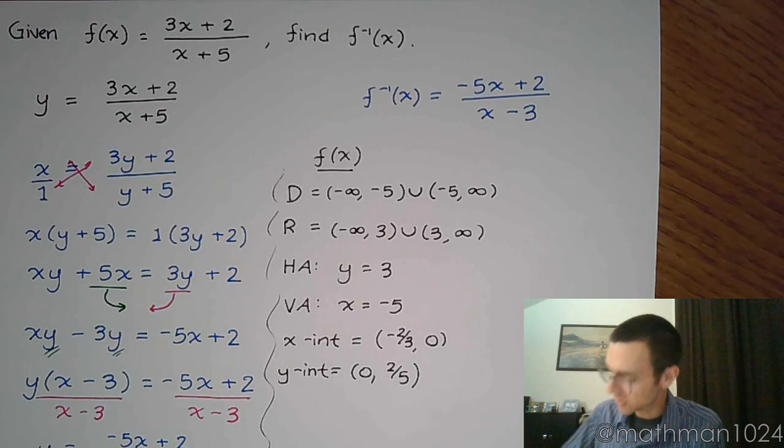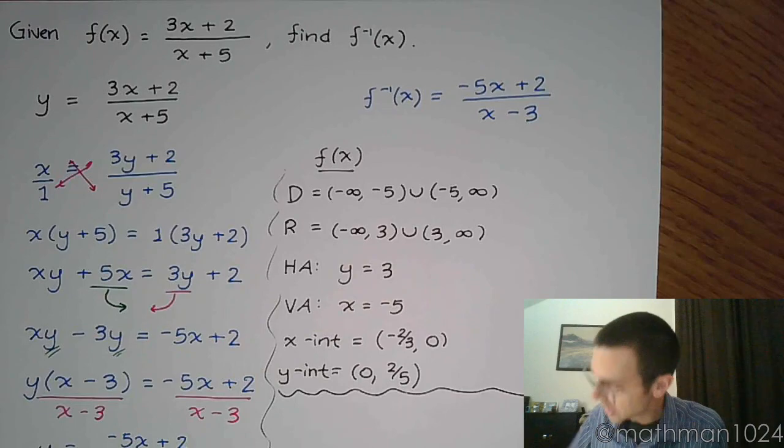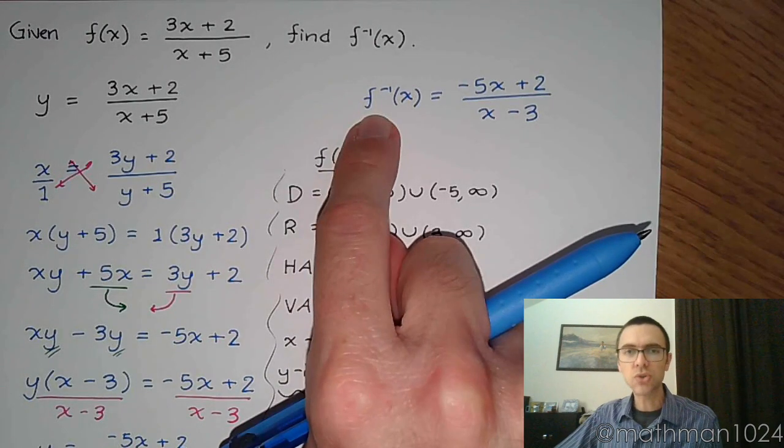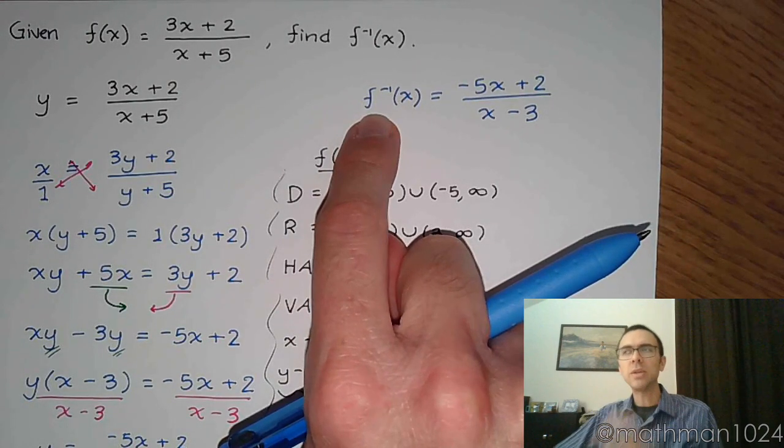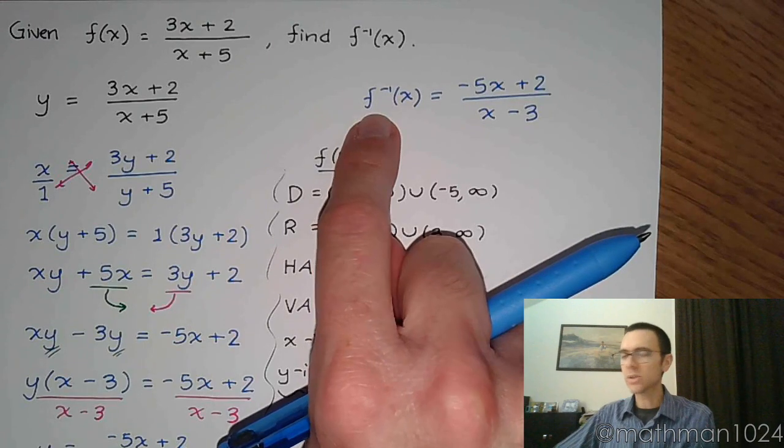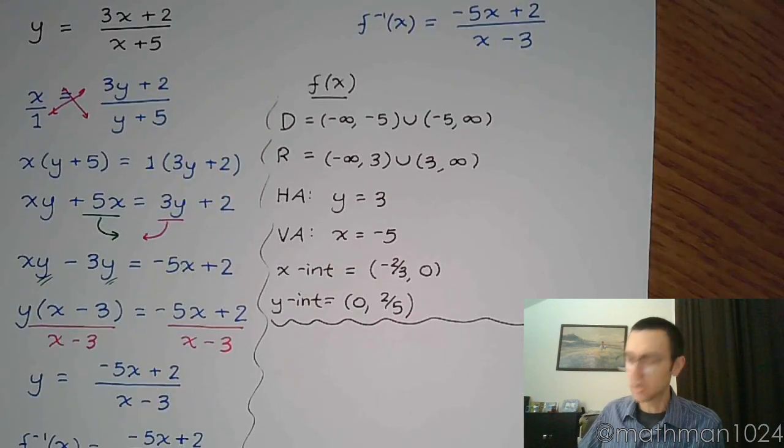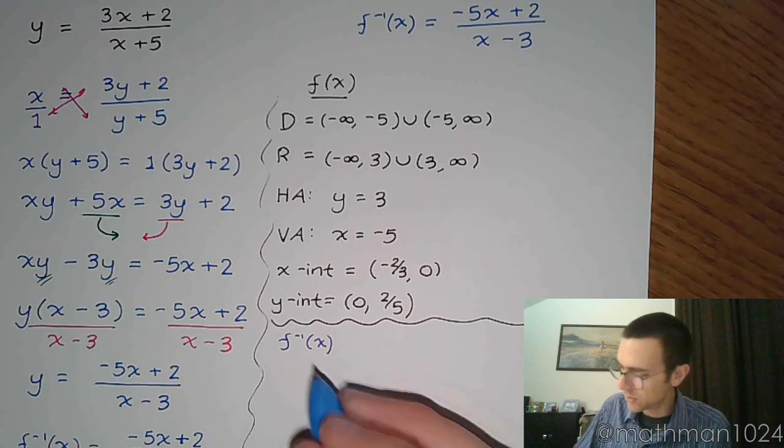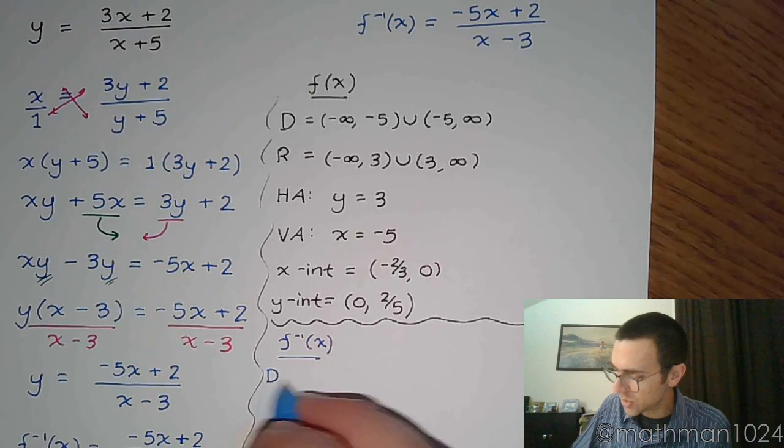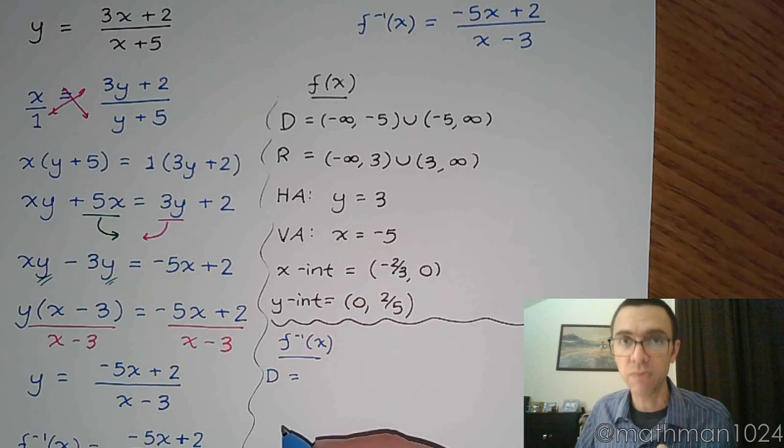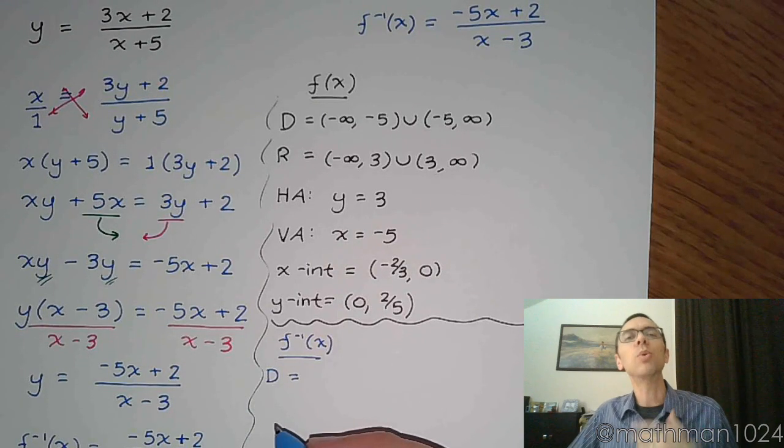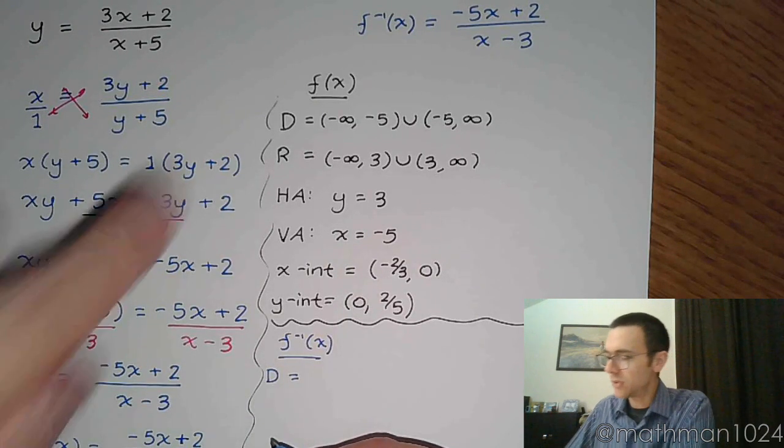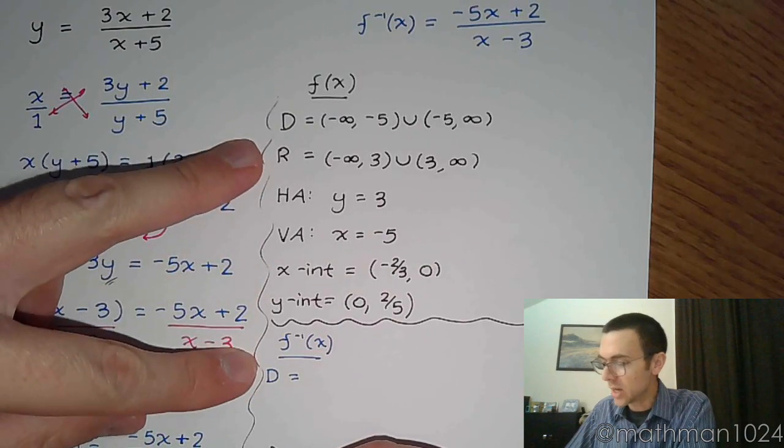Now, if that's my function, and if this is truly my inverse, that means x becomes y, y becomes x. Which means, for my inverse function, his domain, his x values, are going to come from the y values from the original function. So his domain is this guy's range.